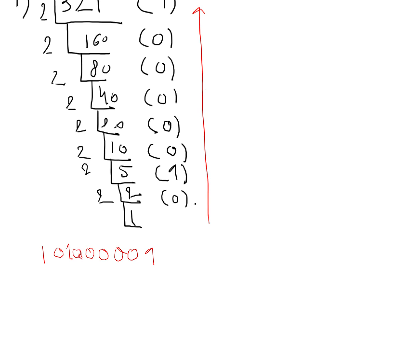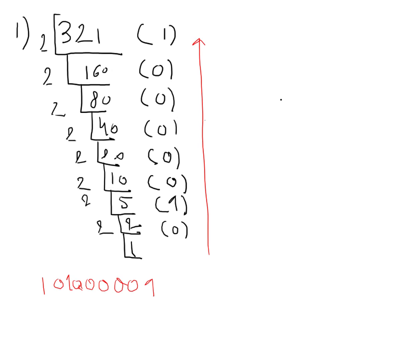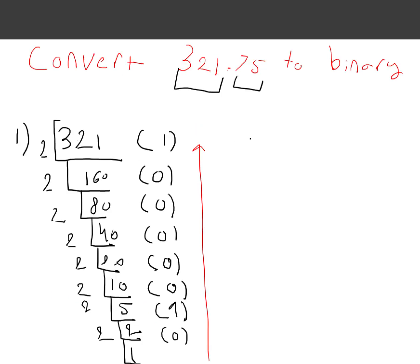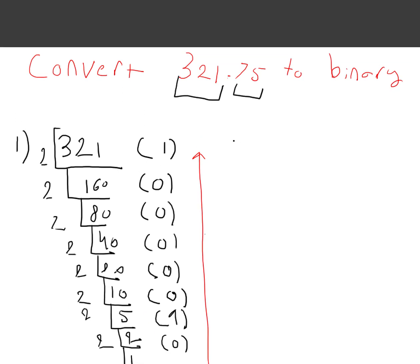And the next thing you want to do is find your binary representation for 0.75. So this is very simple as well, and if you watch the previous videos, you're going to know that you start with 0.75. You're going to multiply this number by 2. If you multiply 0.75 by 2, you're going to get 1.5.